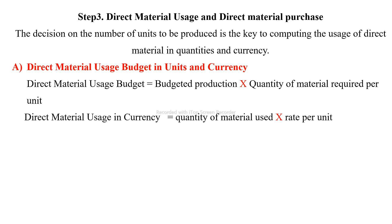Once the production units are determined, we calculate direct material usage. The direct material usage in units is the budgeted production units multiplied by the quantity of material required per unit. Then multiply by the price per unit to get the total direct material usage cost.